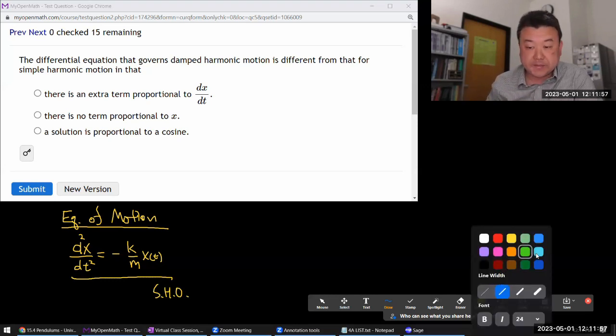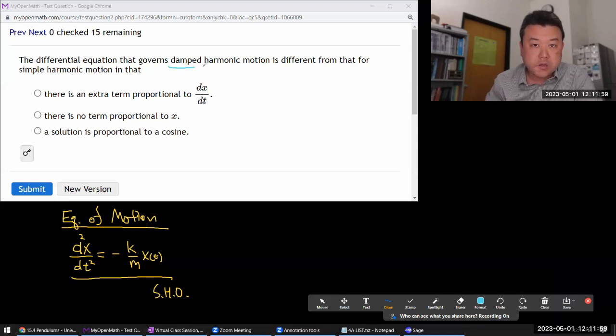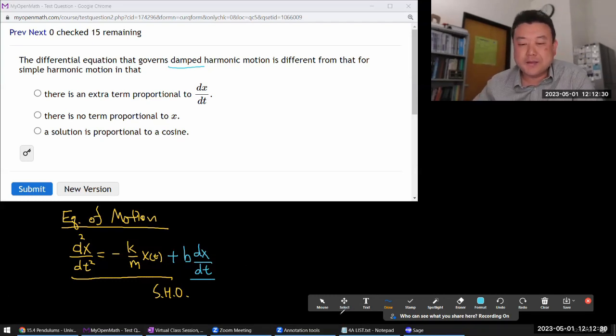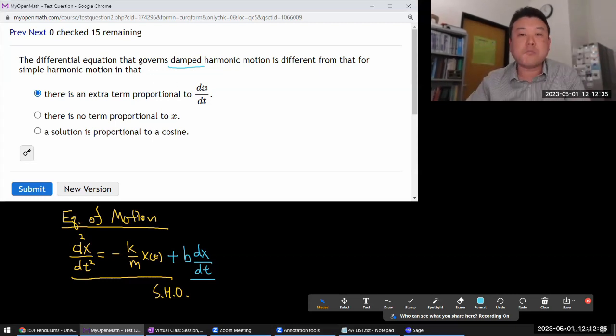When you have damped harmonic motion, the way damping is introduced is through friction, is through air resistance. And the most common way that damping is modeled is by adding a term. I don't remember if it's minus or plus. Some term that's proportional to velocity. And the velocity in terms of the position function would be the first time derivative of position. It could be plus or minus, I don't remember. And here, it's enough to get to this answer. There's an extra term proportional to velocity.